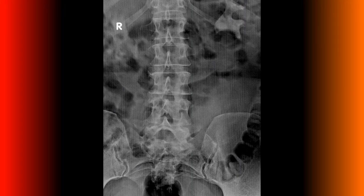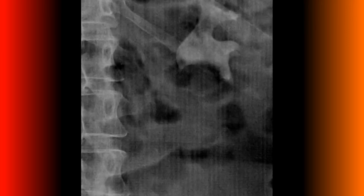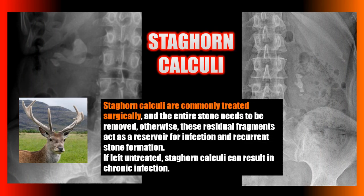Here is a frontal lumbar radiograph with a large calcific density in the left middle abdomen. This is a good example of a staghorn calculus — a renal calculus that obtains its characteristic shape by forming a cast of the renal pelvis and calyces, extending into at least two calyces. Staghorn calculi are commonly treated surgically; the entire stone must be removed, otherwise residual fragments act as a reservoir for infection and recurrent stone formation.